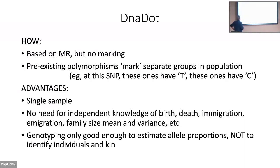Like close-kin mark-recapture, DNA.dot uses a single sample — but there's no need for independent knowledge of family size mean or variance. The genotyping only needs to be good enough to estimate allele proportions, not to identify individuals or kin, which is a far less demanding requirement.